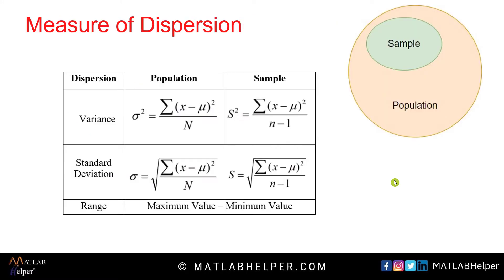Now the second purpose: measure of dispersion. Here you can see the formulas of variance, standard deviation, and range. Variance is the average of the squared difference from the mean. Standard deviation measures how far our dataset is from the mean. Range is the difference between the maximum value and the minimum value. You can observe the mathematical equations of variance and standard deviation for both population and sample data.